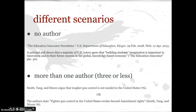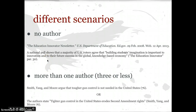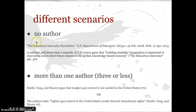Here are some different scenarios for those of you who don't have simple author sources. This is from the US Department of Education source we looked at in group work in the library for IMA's paper — she cited a poll from the website. Because there is no author, she uses the first three words of her citation. She doesn't do the whole title; she does the first three words: 'The Education Innovator.' And since hers is a website with no pages, she wrote paragraph 30. That's how that looks.